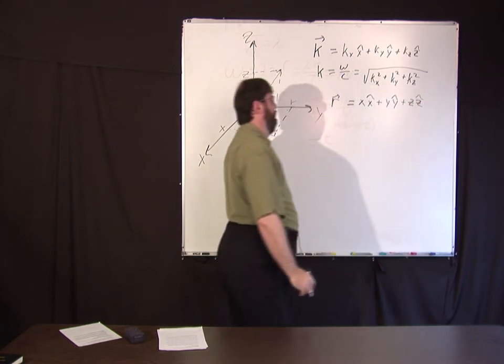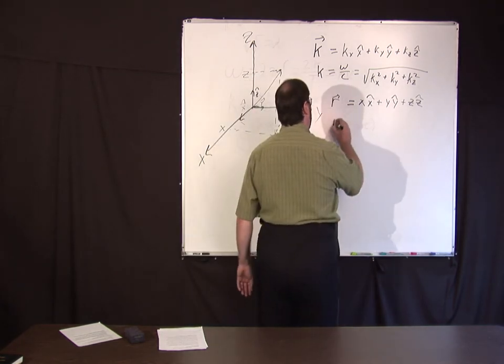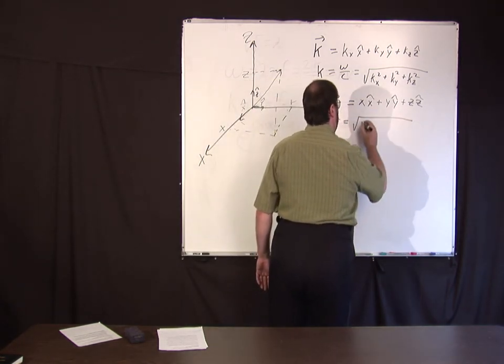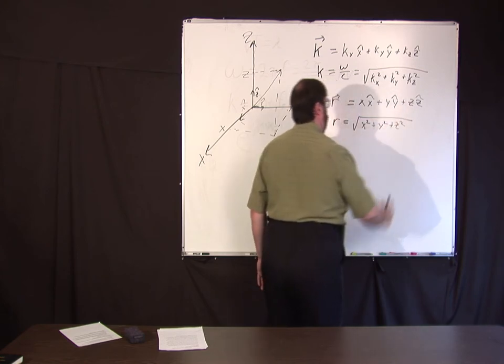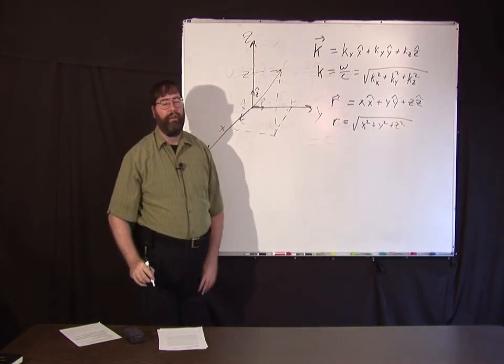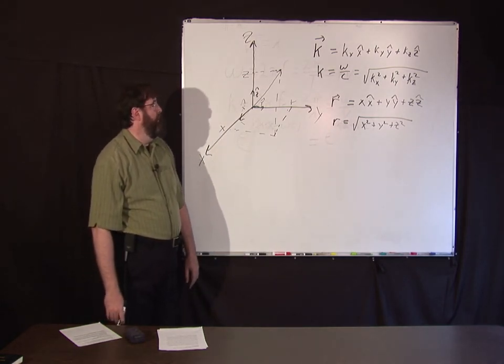The magnitude of r, we'll write r, is the square root of x squared plus y squared plus z squared. Okay, again you can prove this using the Pythagorean theorem if you want, it's fairly easy.